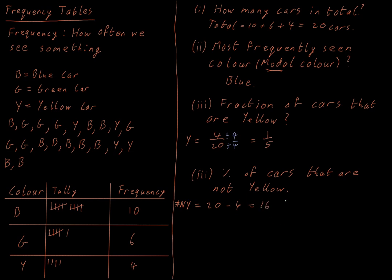And then to get a percentage, the percentage not yellow would be 16 out of 20. And I want this as a percentage. So I would want to get my denominator of 100. So what do I need to do? I need to multiply above and below by 5, which gives me 80 out of 100, which is equal to 80%.